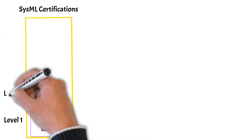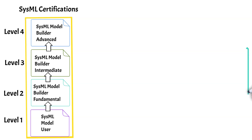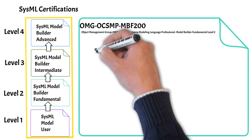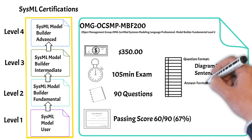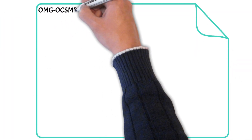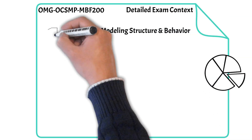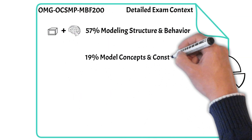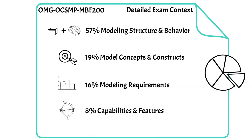After the Model User exam, you can take the SysML Model Builder Fundamental level two exam. The question format is the same — still multiple choice, choose one — but the passing score is slightly higher and you get 105 minutes instead of 90. Level two is more conceptual rather than SysML syntax. The exam is 57% modeling structure and behavior, 19% model concepts and constructs, 16% modeling requirements, and 8% capabilities and features.